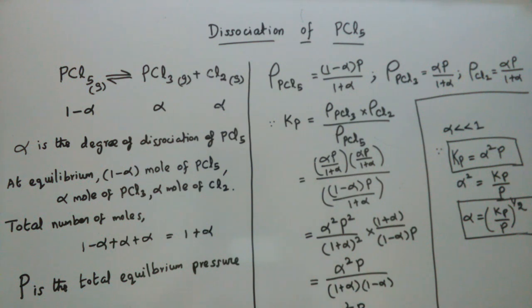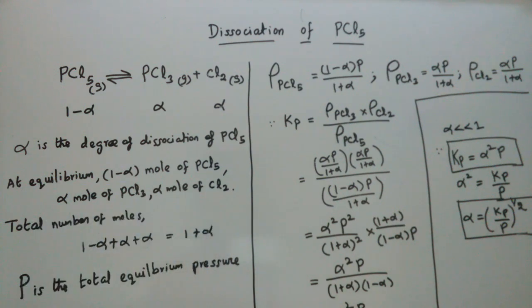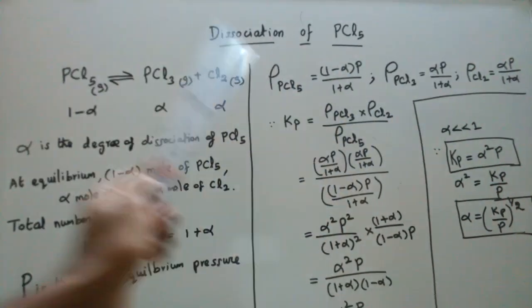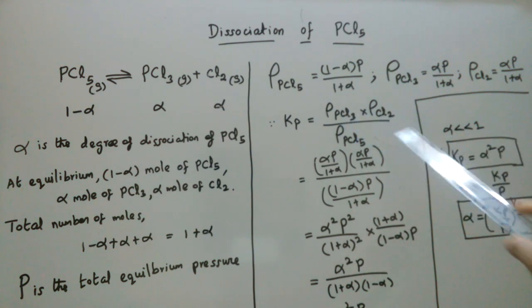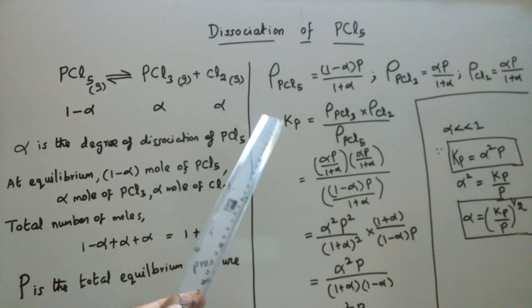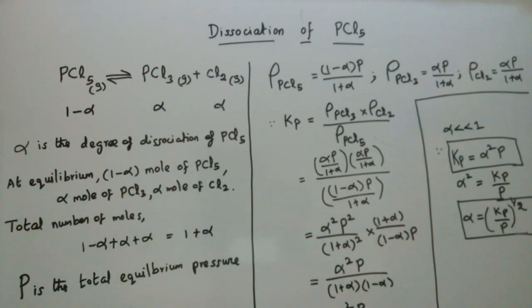To summarize the dissociation of PCl₅: remember the total number of moles (1 plus alpha), the Kp expression, and the final result that alpha equals the square root of Kp over P. Exam questions may give this expression and ask for Kp or alpha, presenting options a, b, c, d in different forms. You can use these results to choose the correct answer.